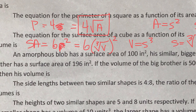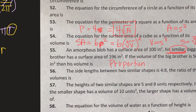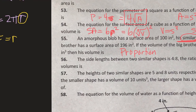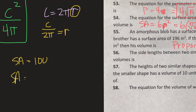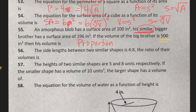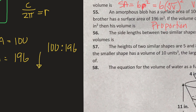An amorphous blob has a surface area — so now we have three-dimensional similarity. These are always found with proportions. Anytime we have similarity, we're going to be making a proportion. Similarity equals proportion. The smaller blob has a surface area of 100, and his bigger brother has a surface area of 196. So we have a ratio of 100 to 196 — that's your area ratio. If the volume of the big brother is 500, we're looking for the volume of the smaller one.